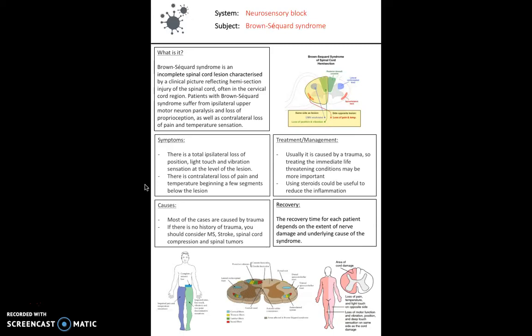There is total ipsilateral loss of positioning — so proprioception, light touch and vibration — and on the contralateral side, a loss of pain and temperature. This makes sense in terms of the tracts by which these are transferred to the brain.